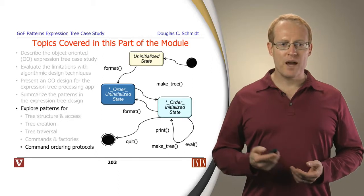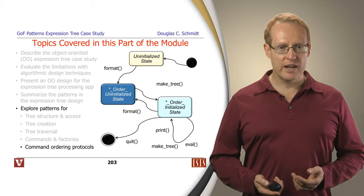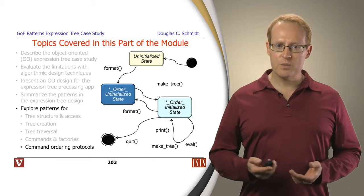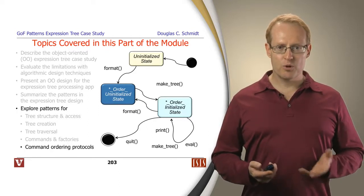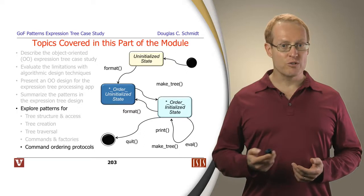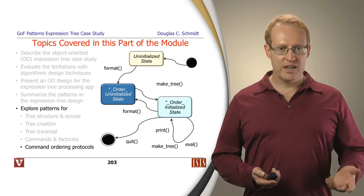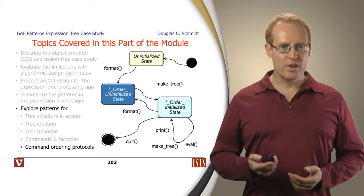We talked about patterns for tree structure and access, the composite and bridge pattern. We talked about patterns for tree creation, interpreter and builder. We talked about patterns for tree traversal, the iterator, prototype and visitor patterns.